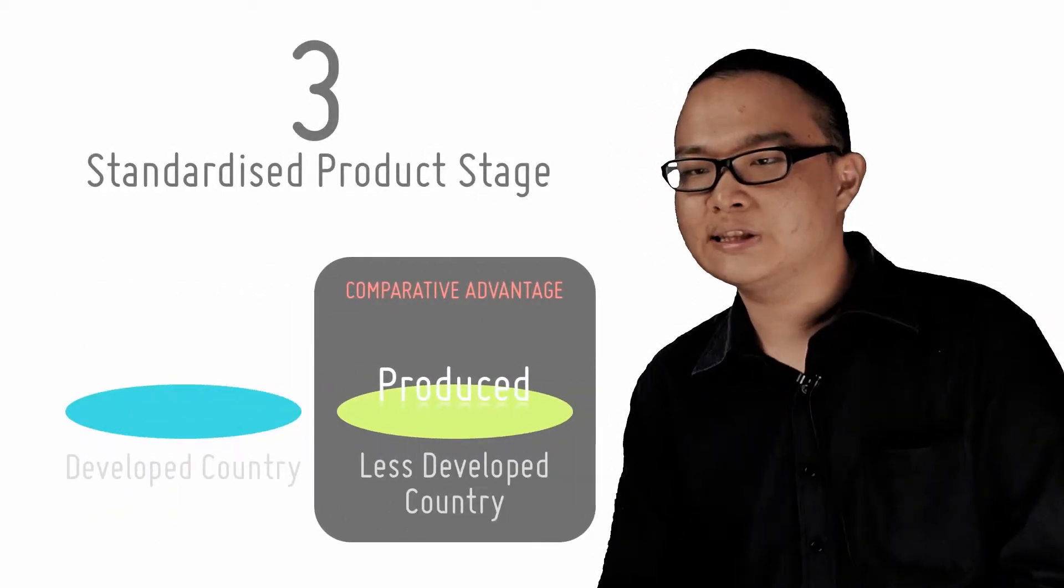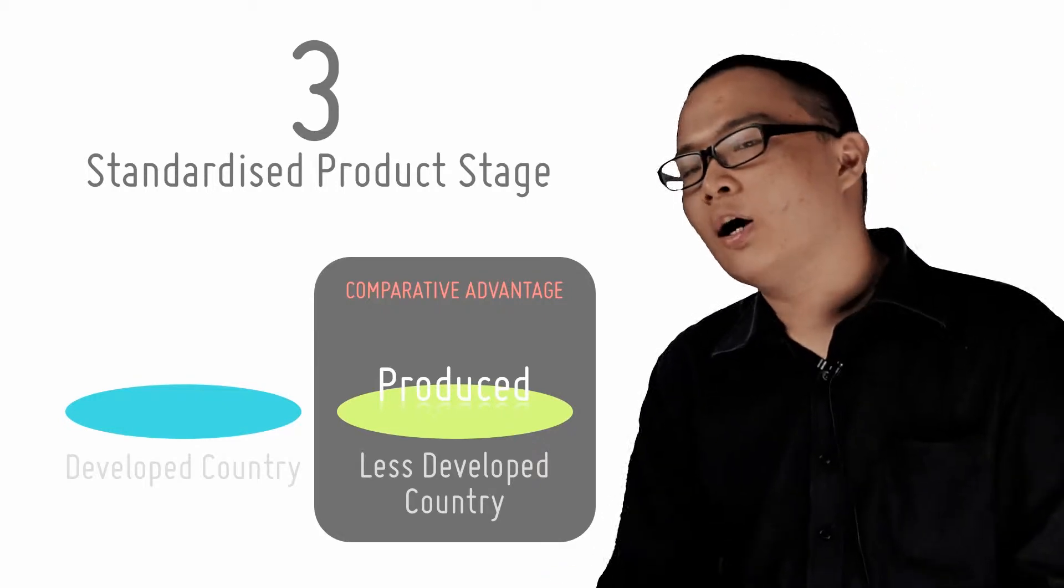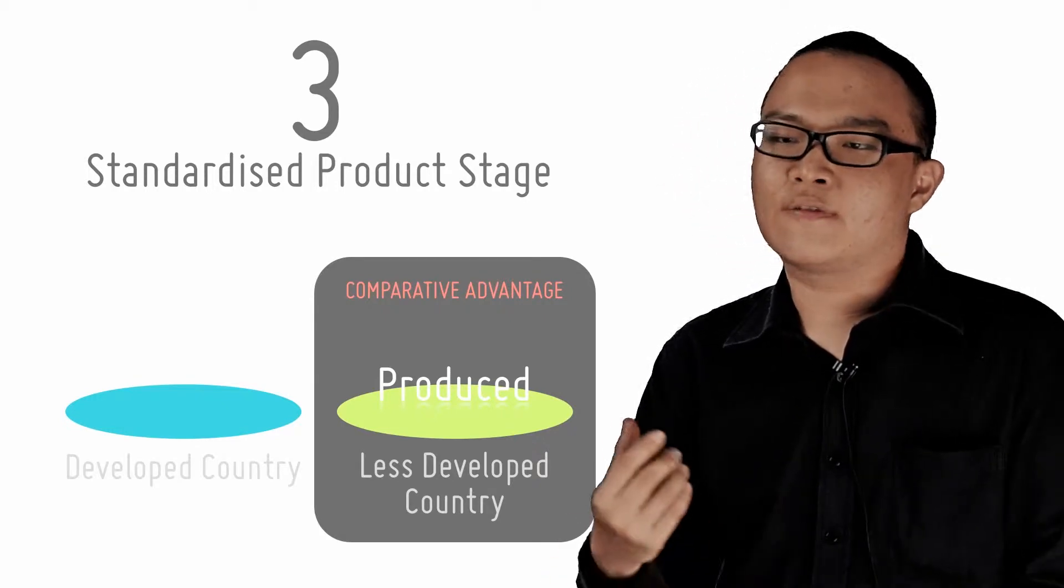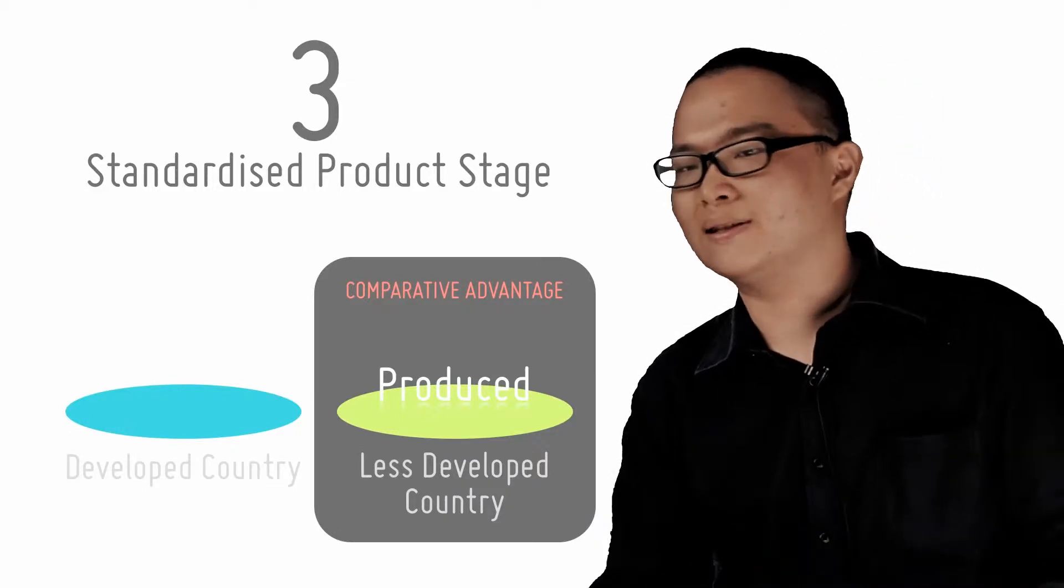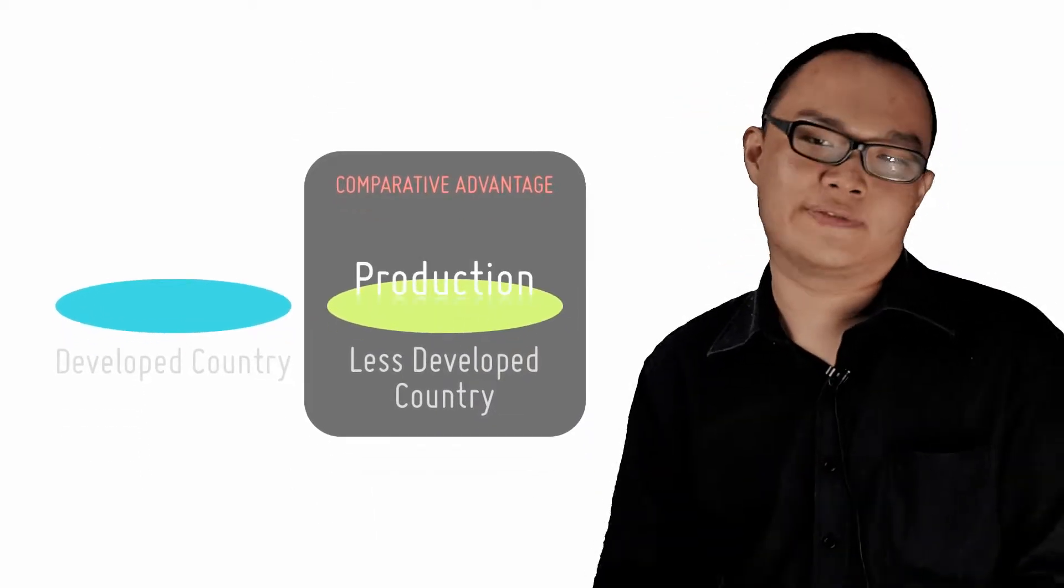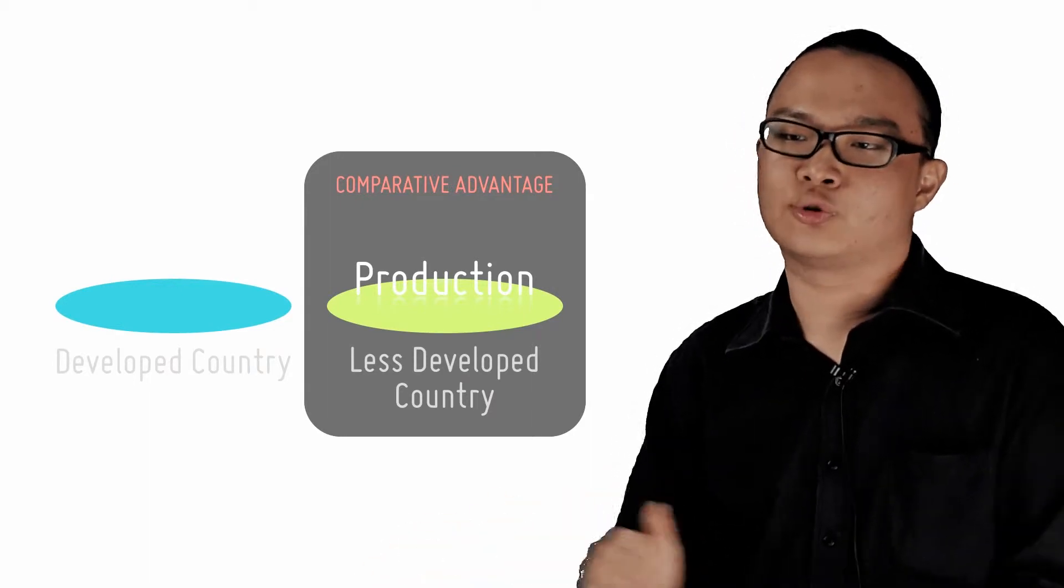By stage 3, the standardized product stage, competition is very intense and the lowest cost producer wins. Offshore manufacturing via foreign direct investment happens. Now remember, we assume that capital does not flow internationally in Ricardian trade theory.